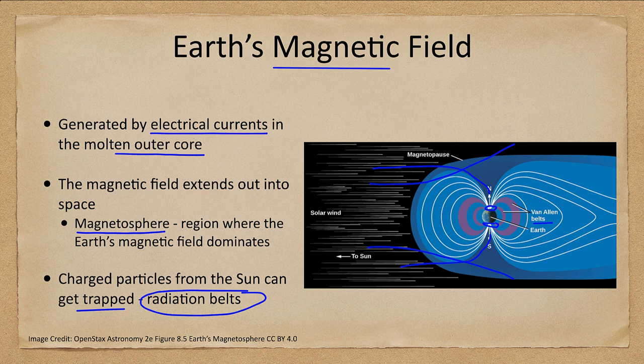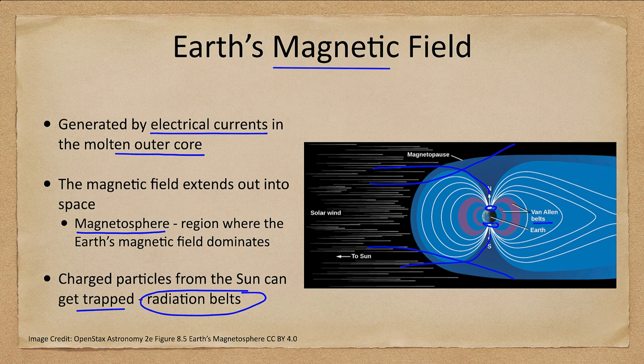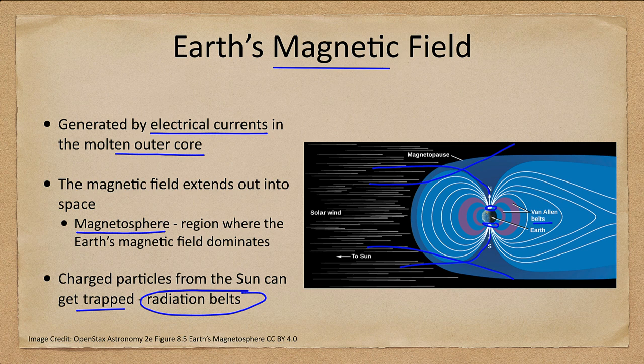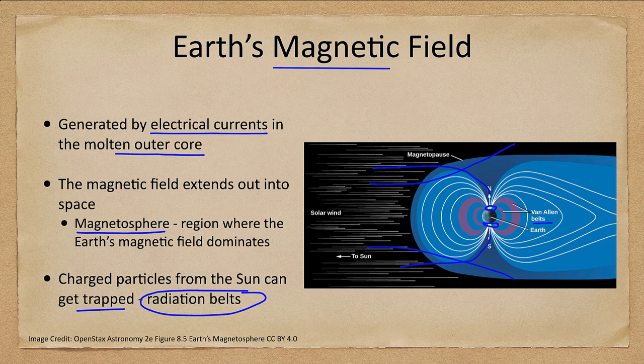They're not pleasant places to stay. You would not want to linger in one long. But as was shown with the Apollo missions, astronauts can pass through them and we're going through them relatively quickly. The radiation exposure is minimal. However, there are not places you would want to place a satellite or a space station or anything because of the much higher levels of radiation.